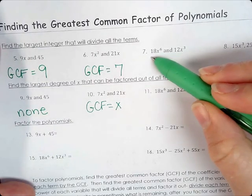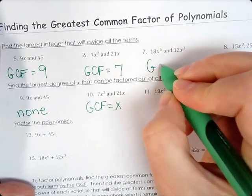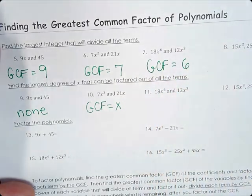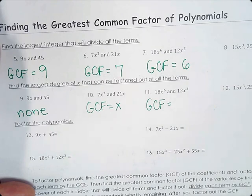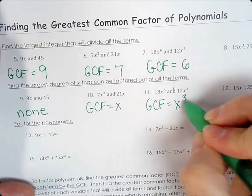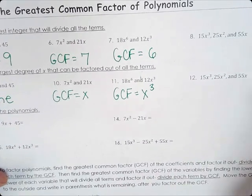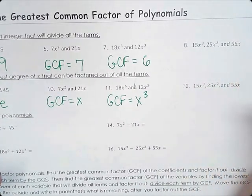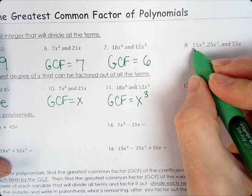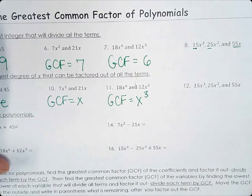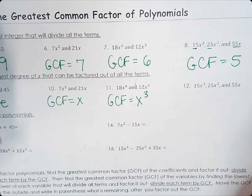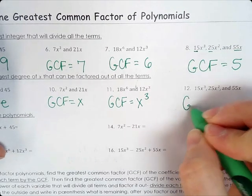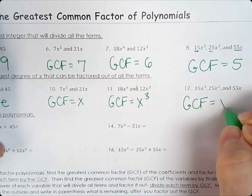Number 7: for 18 and 12, the GCF is 6 — that's the largest number that goes into both. Then the x's: how many x's do they have in common? Three, so x cubed. For number 8 with three terms — 15, 25, and 55 — what goes into all three? Five. And what exponent of x do all of them share? Just x to the first power.